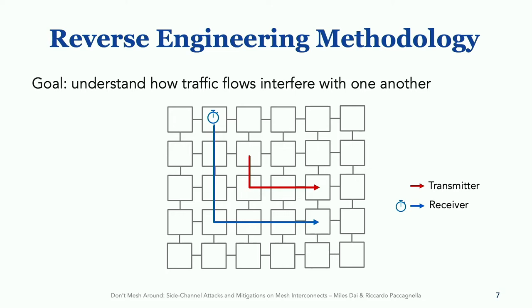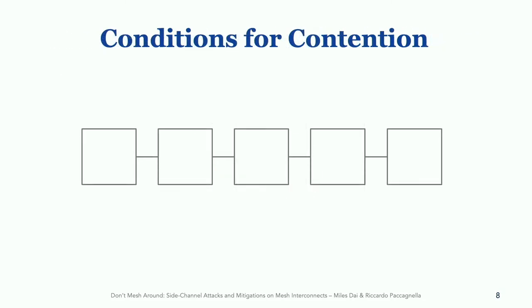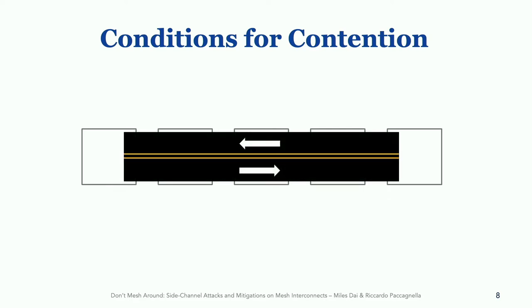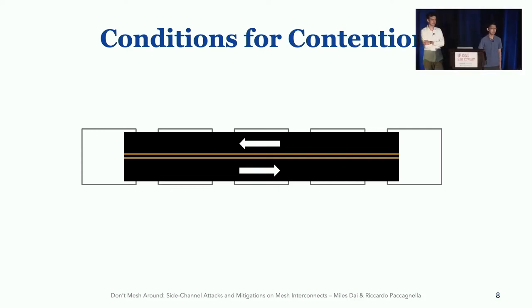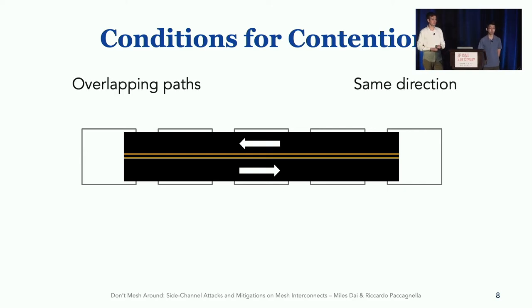If the receiver observes an increase in latency, then we say that the receiver has observed contention. This naturally raises the question: what might cause the receiver to observe contention? To get a better handle on this, we can intuitively imagine one row of the interconnect as a two-lane way of traffic. In this model, tiles can inject traffic onto the road and the traffic can exit the road onto any tile. You might assume that two traffic flows that are overlapping and traveling in the same direction, since they share the same path, might have the ability to interfere with one another.